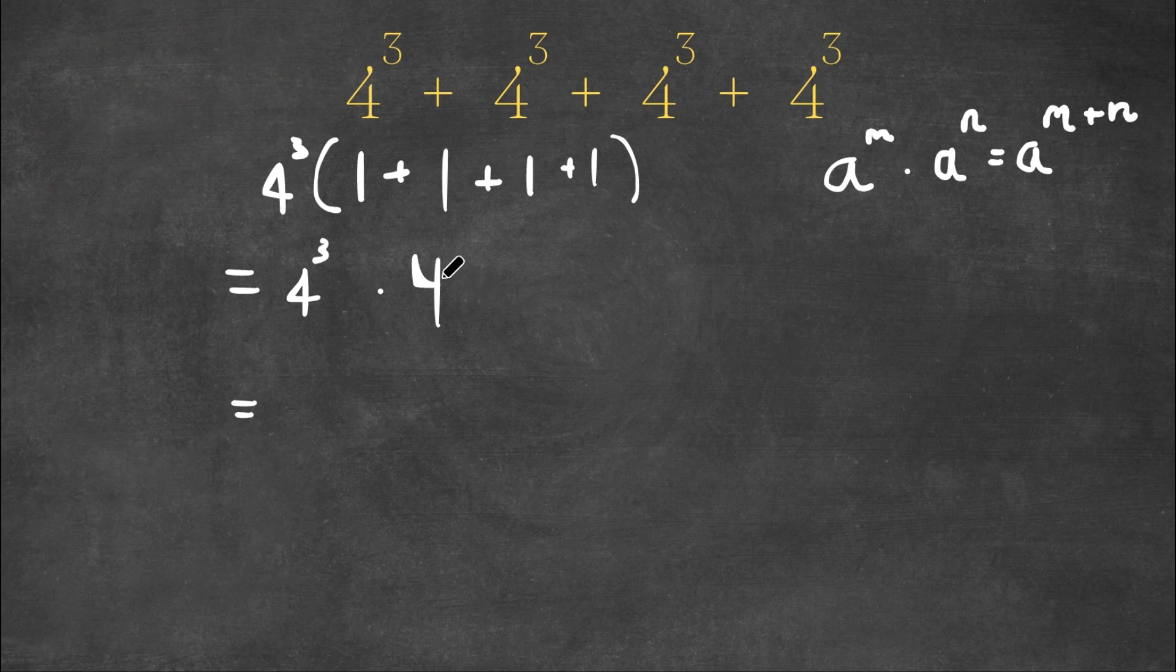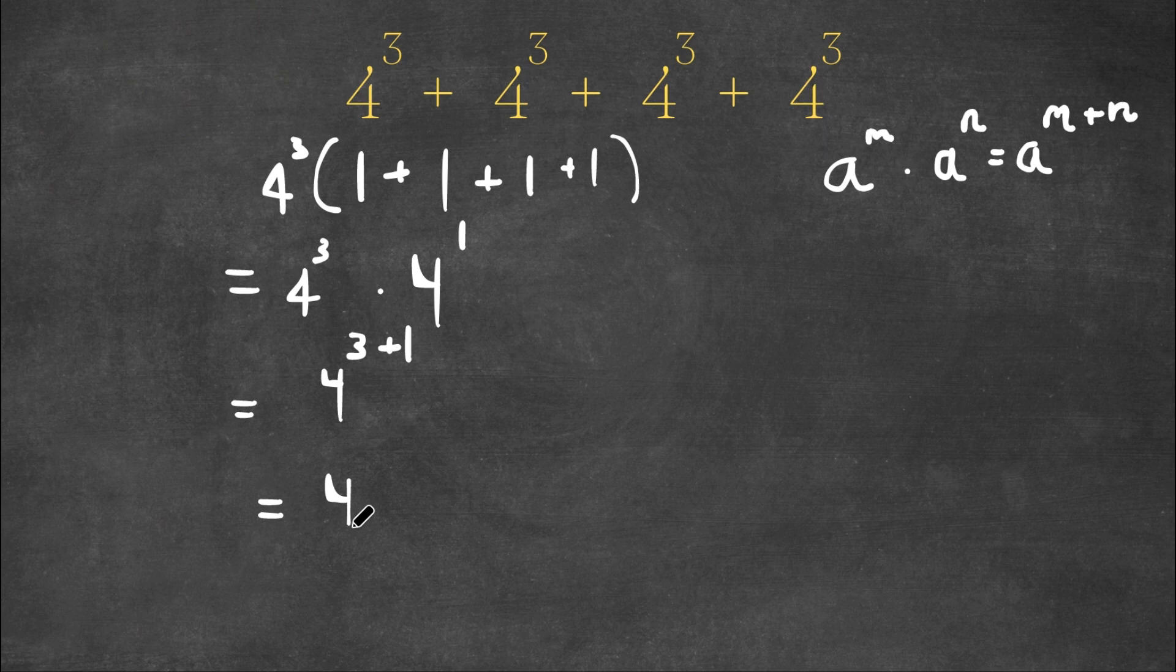So we can think of 4 as 4 to the power of 1. So 4 to the power of 3 times 4 to the power of 1, this would equal 4 to the power of 3 plus 1. And 3 plus 1 is 4. So this would equal 4 to the power of 4.